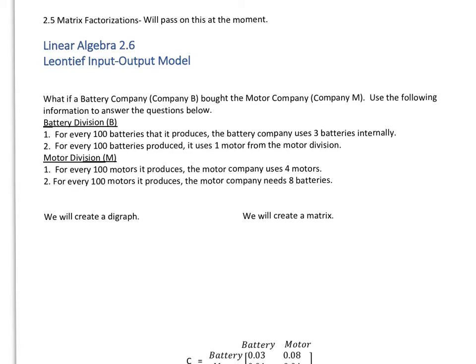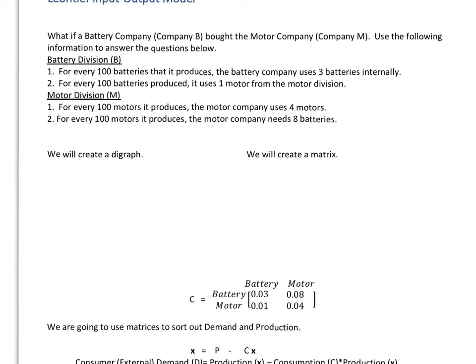And then the motor division, you can read that there, it's going to use four motors for every motor it produces. And then eight batteries, so the batteries have to come from the battery company over to the motor company based upon every 100 motors that it does produce. So we're going to make, first of all, a digraph just to help us out with this situation.